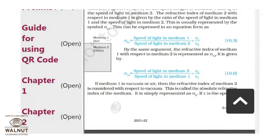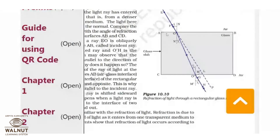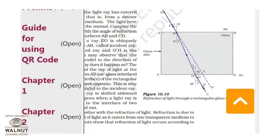We have started with the refraction process. Whenever light travels, it travels in a straight line, but if you keep a glass piece in between, what will happen to the light? You can see in this diagram — this is the light ray coming from air, and you have kept a glass slab in between. The light bends when entering the glass slab, and again when leaving the glass medium it bends a little bit. This is called refraction — light will not reflect back, it will pass through the medium.